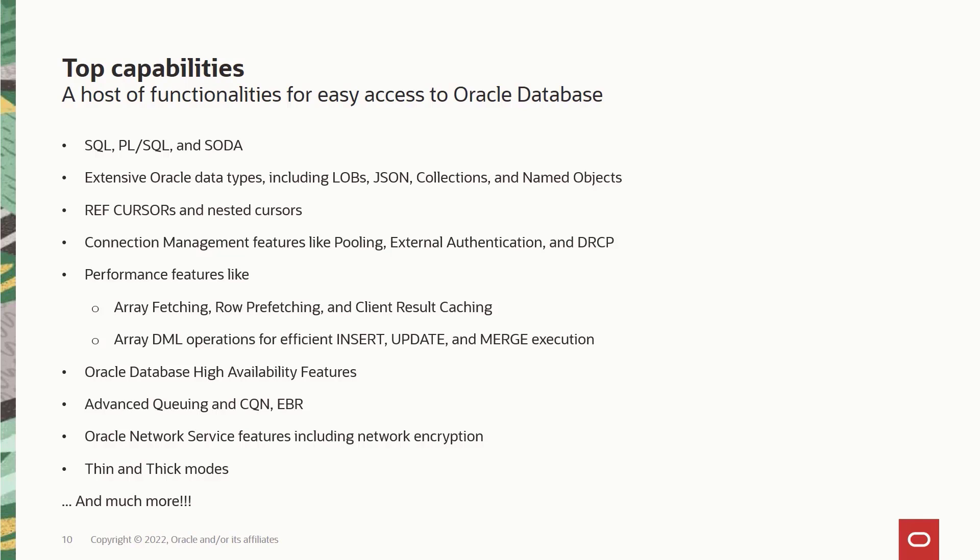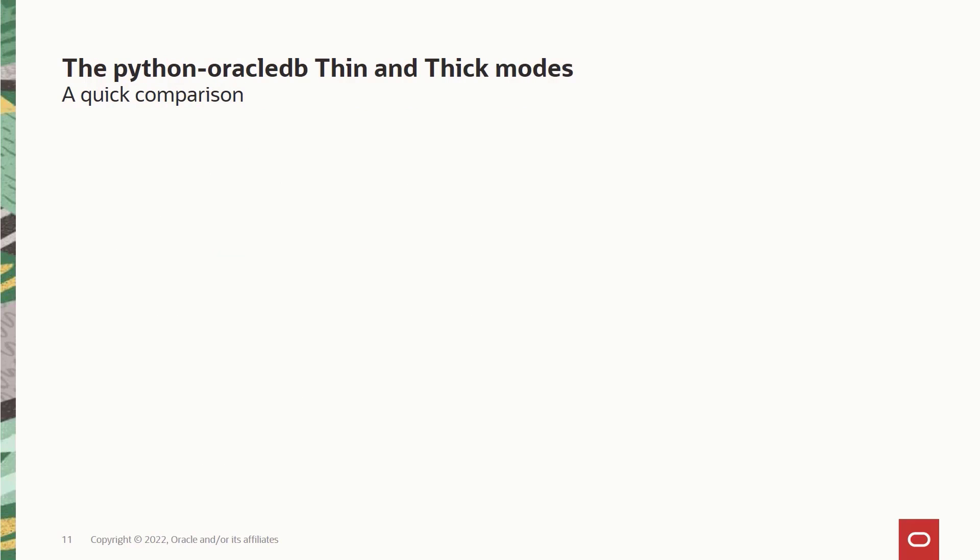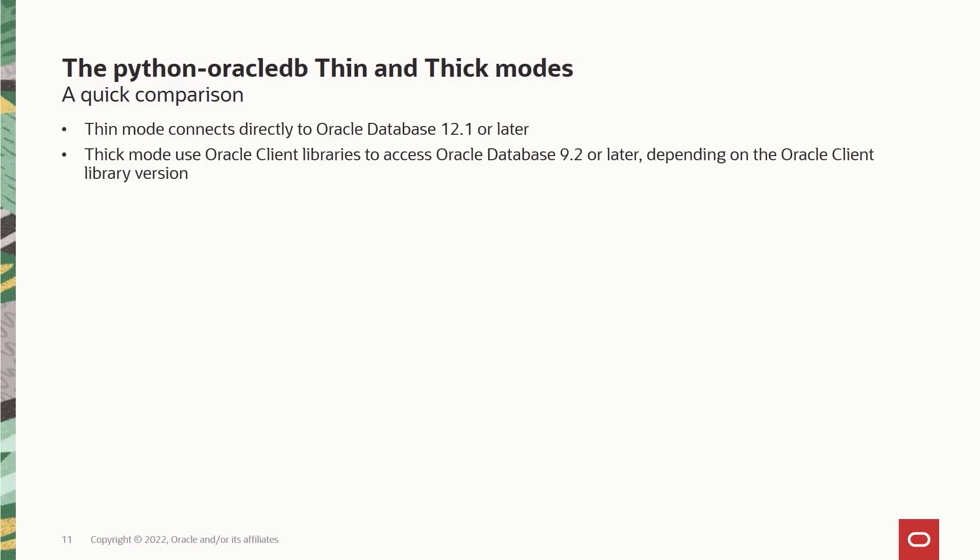Of course there are many more features available which you can find in the Python Oracle DB external documentation. If you remember from the previous video, the Python Oracle DB driver is a thin driver by default which connects directly to the Oracle database and has an optional thick mode. So let's take a deeper look into the key differences between the thin and the thick modes. In thin mode, Oracle database support starts from version 12.1 or later. The thick mode supports Oracle database version 9.2 or later depending on the Oracle client library versions.